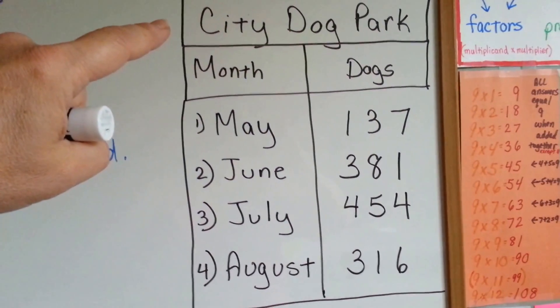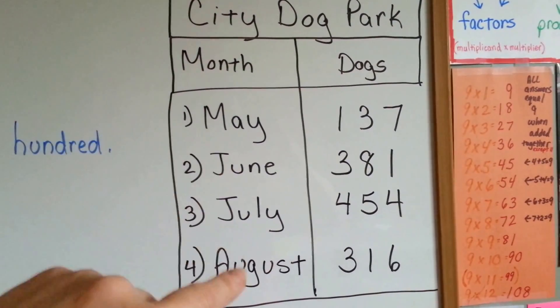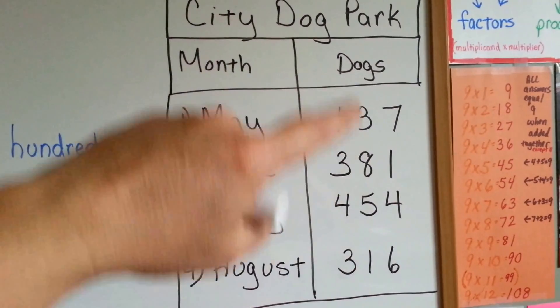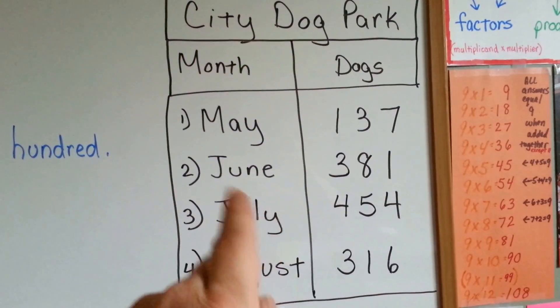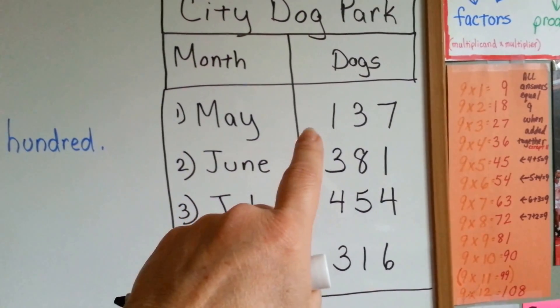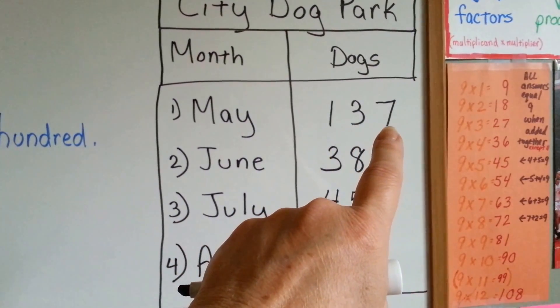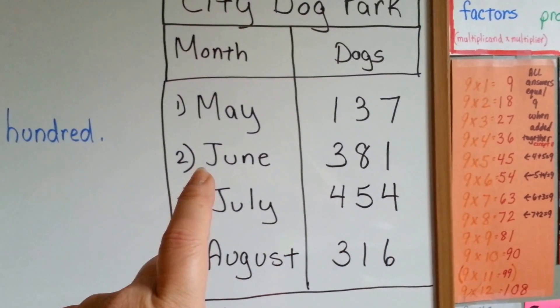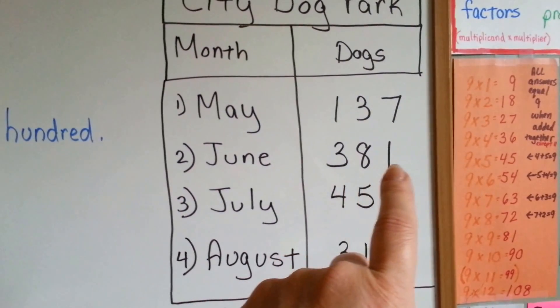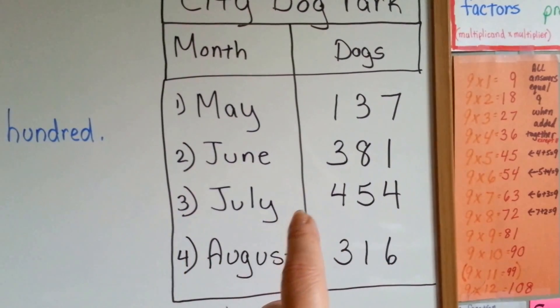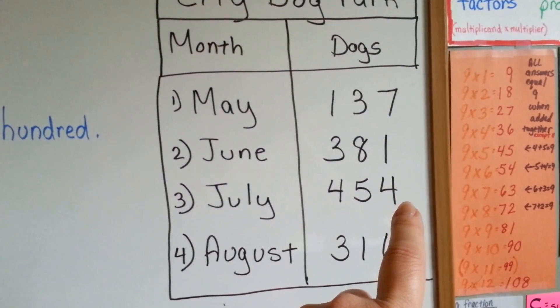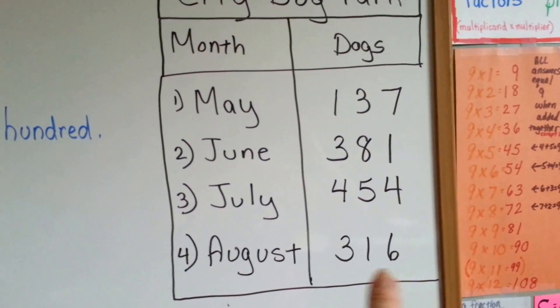This is City Dog Park table. This is the months, and this is the number of dogs. In May, 137 dogs visited the dog park. In June, 381 dogs visited. July, there were 454, and in August, 316.